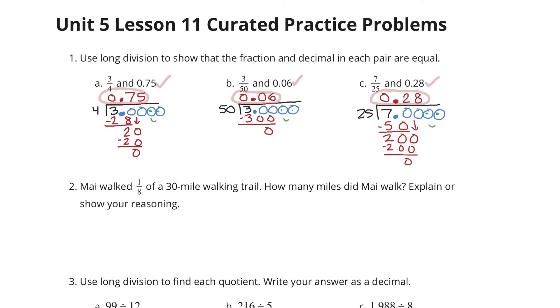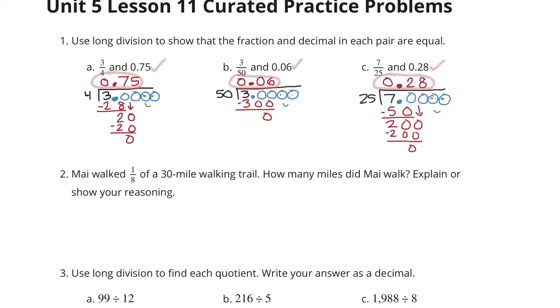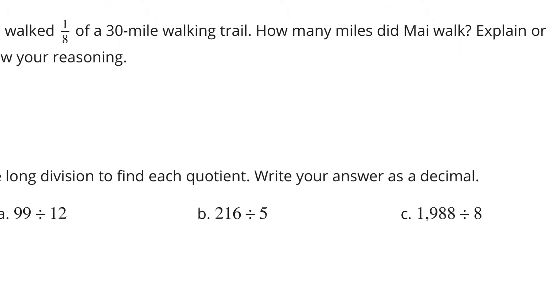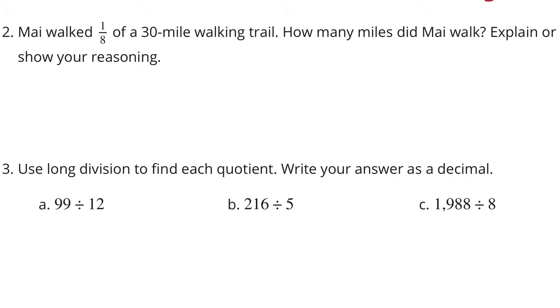In question 1, we used long division to show that the fraction and decimal in each pair are equal. In question 2, May walked 1 eighth of a 30-mile walking trail. How many miles did May walk? Explain or show your reasoning.